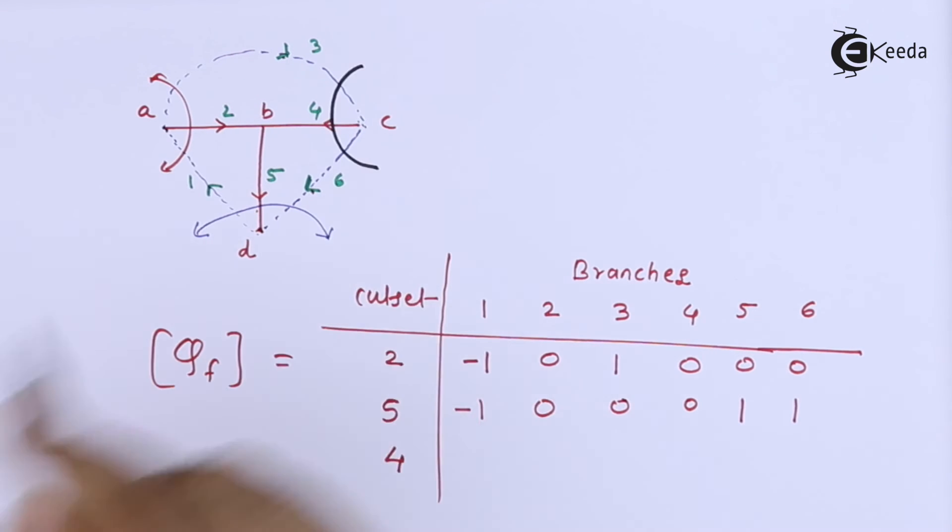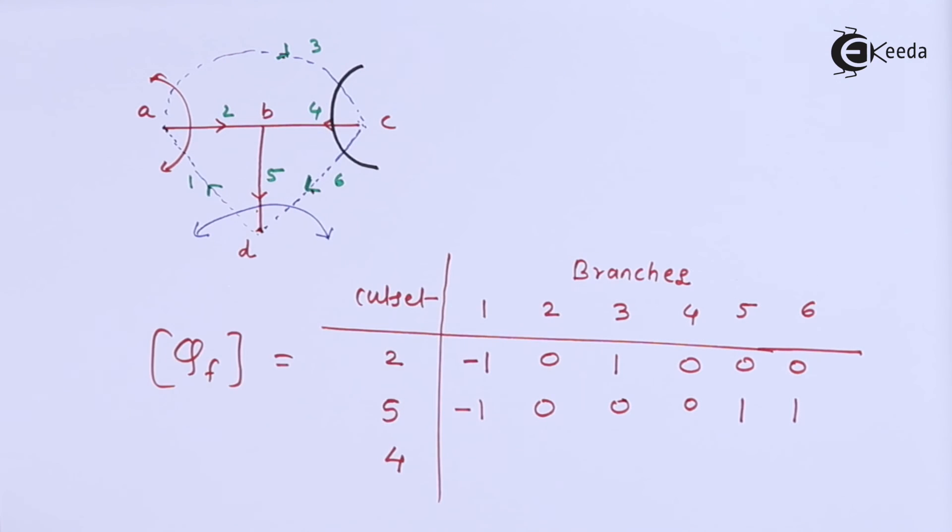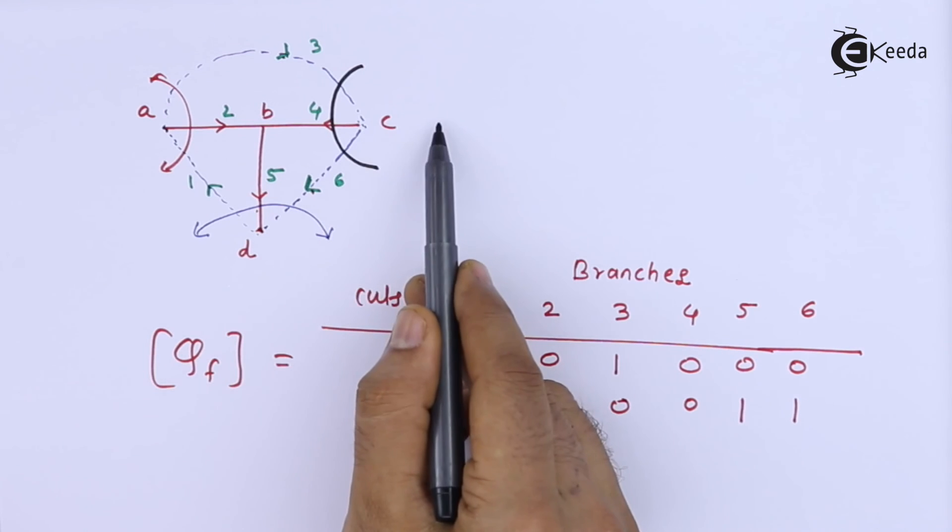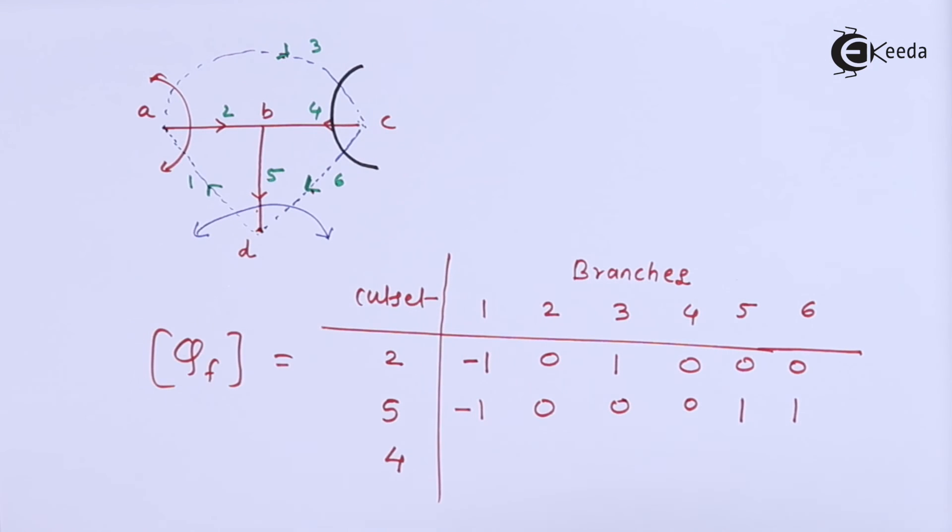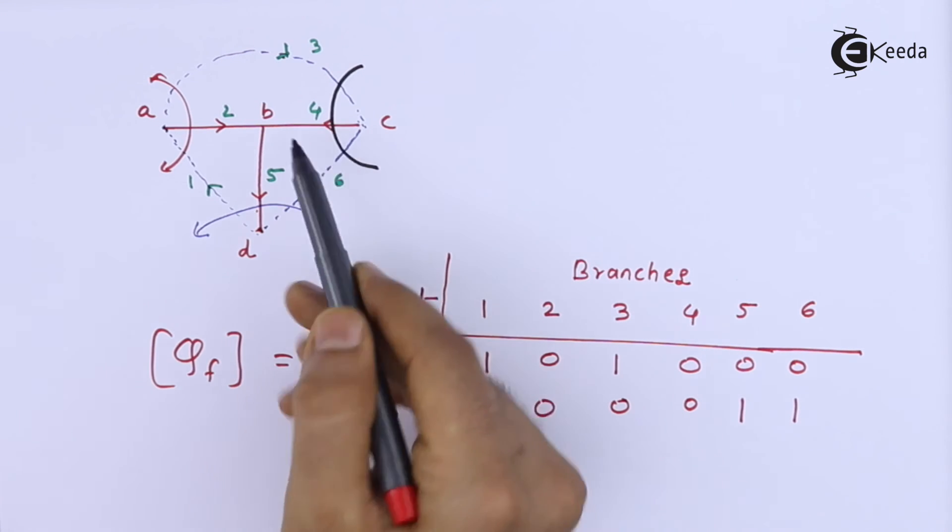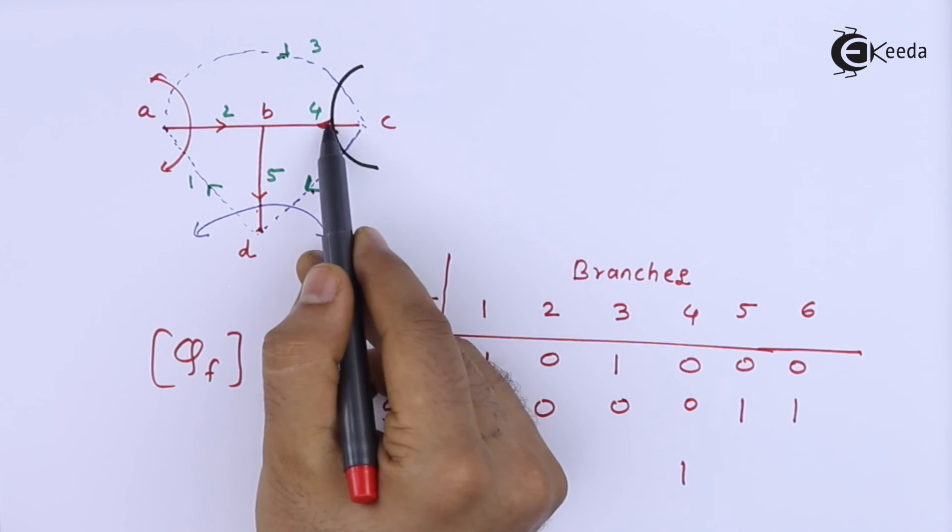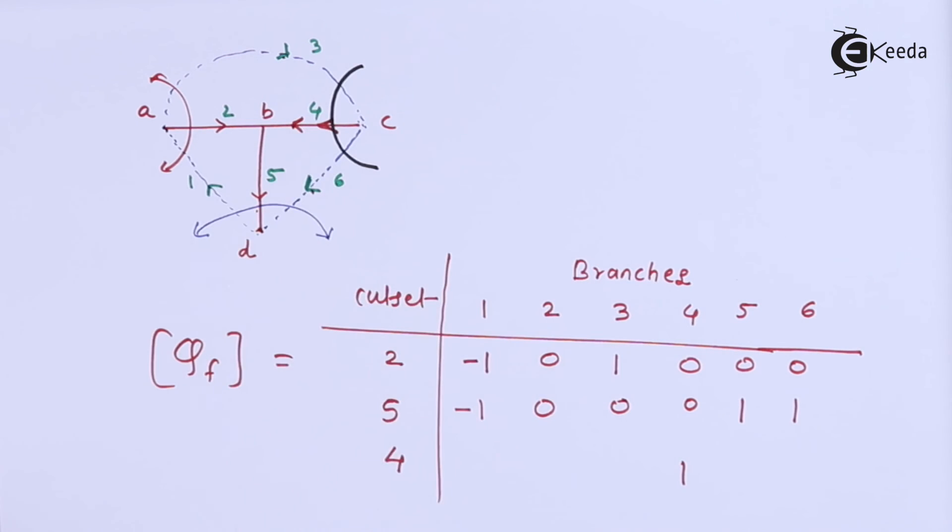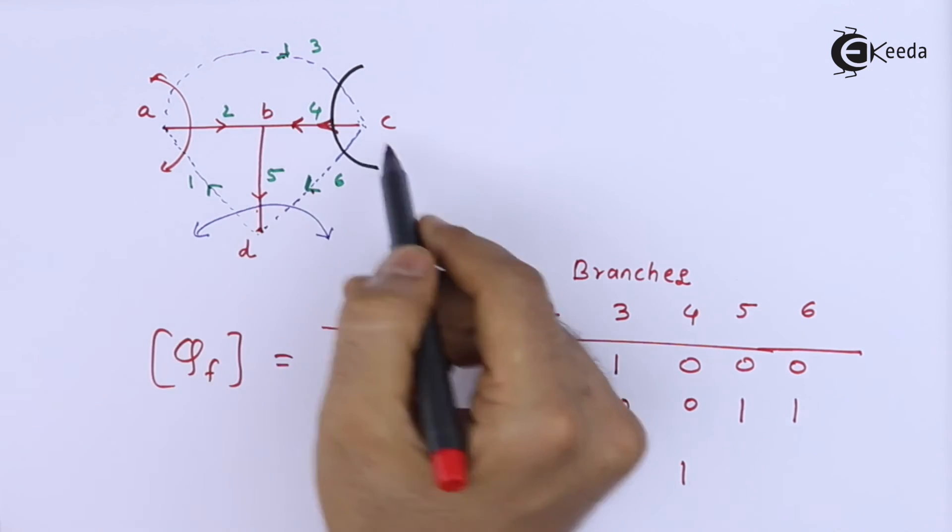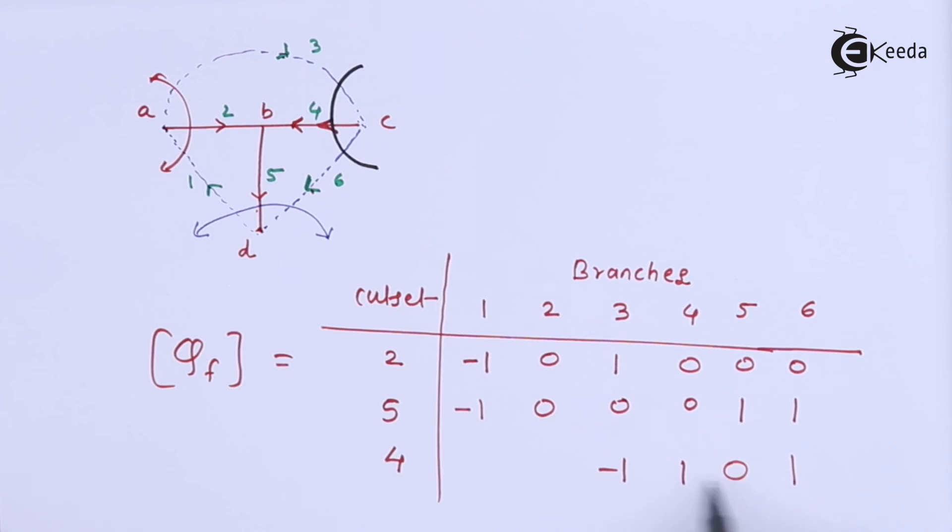And for cut set 4, this is how I am going to cut, so that my diagram is divided into two parts. This node C at one part, node A, B, D at another part. And here if I write, so for this cut set 4, going away from, you can see the direction is like this, going away from node C should be considered as positive. So this is considered positive. 3 is coming towards node, which is exactly against, see this is going away. So going away is positive, 3 is coming, so 3 is negative. And this 6 is going away, positive, rest will be 0.